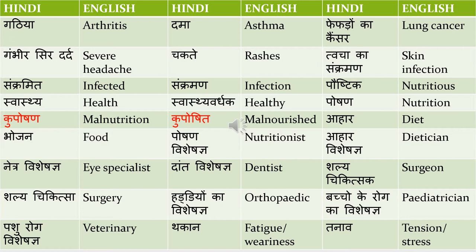Bhojan is food and ahar is diet. Meals can also be called bhojan, and lunch is 'dopahar ka khana.' Poshan visheshagya means nutritionist — poshan is nutrition and visheshagya means specialist, so combining them gives nutritionist. You can use it as-is, but translating it as poshan visheshagya gives a good impression on whoever is examining your translation.